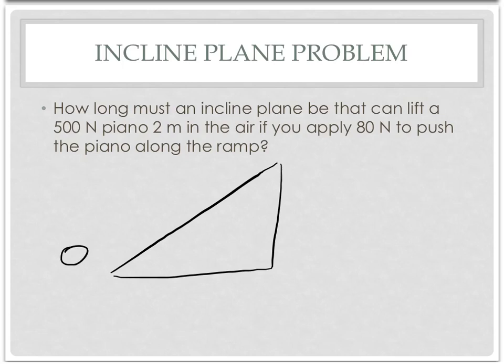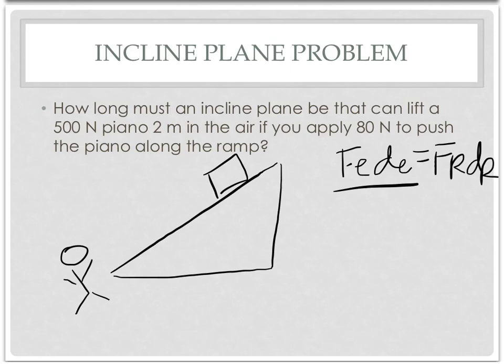So pictures definitely help. Draw the person in there, draw the object that's getting moved, and then we need to figure out what are our parts. Remember the E's relate to the person. The person is going to apply some sort of force, that is your FE, and it's going to apply that force. Well, it would make sense they walk along the ramp, so their distance is the length of the ramp.